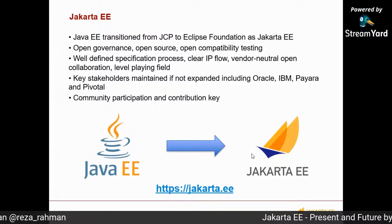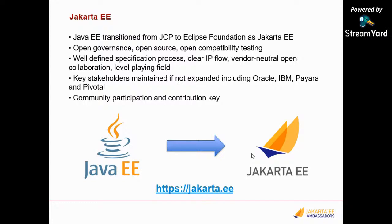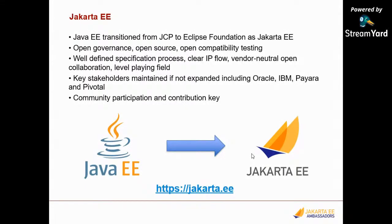When it was in the JCP, there were special privileges for Oracle and most of the IP belonged to Oracle — that has now completely changed. The stakeholders are mostly the same: Oracle is still involved and continues to be the biggest contributor, along with IBM, Payara, Pivotal, and a whole bunch of other companies. Most importantly, there's also all of us. One of the big differentials in this new format is that it's much easier to contribute as an individual, and this is one of the objectives of moving this technology to the Eclipse Foundation.